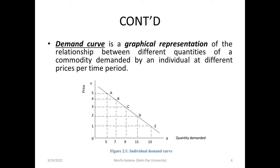Looking at the X-axis, the quantity is 80 kg, naming point B. Ultimately, as price changes — for example, price is 6 — we can see the corresponding price as well as quantity demanded on the graph.